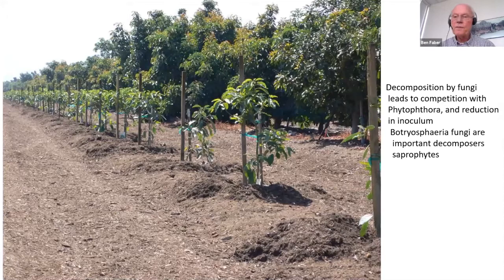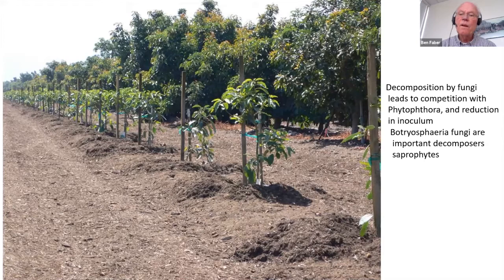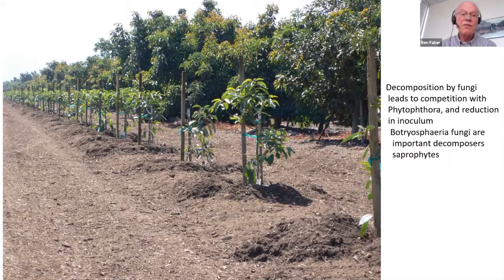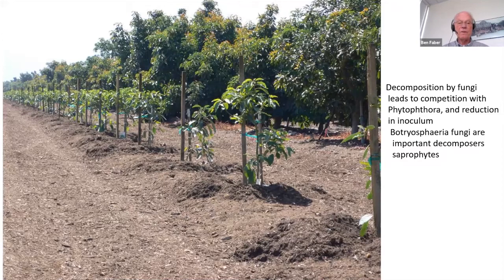Mulch is very effective. It works by decomposing, which creates an environment hostile to Phytophthora. One of the primary decomposers is this group of fungi called Botryosphaeria. These are saprophytes — they feed off of dead tissue. They will go to live tissue if you have a stressed tree. Mulching is a very effective practice; it's a natural process creating an environment hostile to Phytophthora. One of the common fungi found in soil where decomposition of organic matter occurs are the Botryosphaeria.